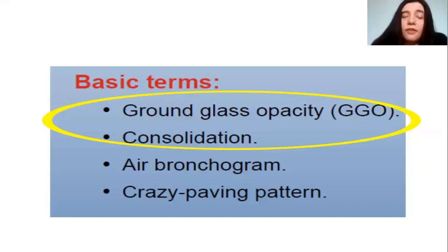This is a progressive alveolar filling which produces the ground glass opacities. Other diagnoses that can give ground glass opacities include infection, edema, diffuse alveolar damage, hemorrhage, and aspiration. Even some chronic cases like sarcoidosis and alveolar proteinosis can produce this pattern.